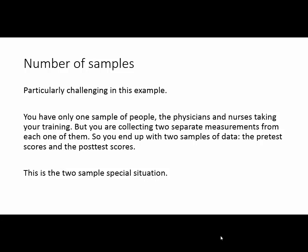This is a challenging one in this example, because if you think about it, you only have one set of people — one sample of people — the physicians and nurses who are taking your training. But you're actually collecting data from them twice. You're measuring the pre-test scores and you're measuring the post-test scores. So you actually have two samples of data, and there's a natural pairing between the pre-test scores and the post-test scores. You can pair them by the person who took them. Person A's pre-test score goes with person A's post-test score, and so on. This is the two-sample special situation.